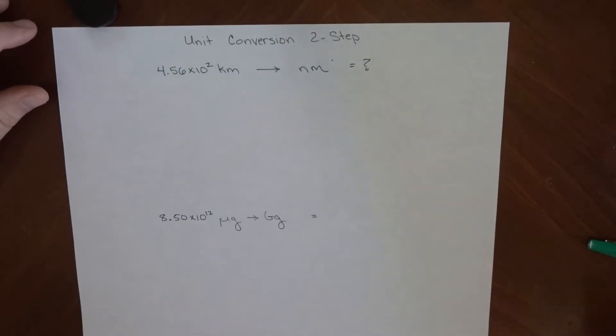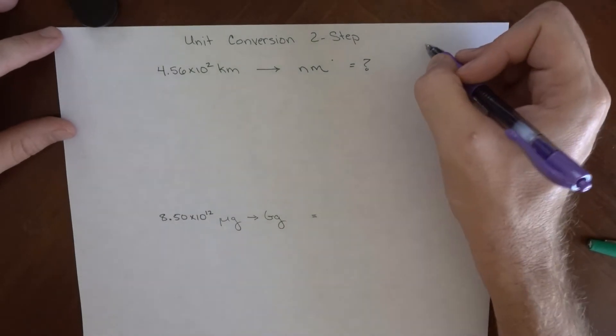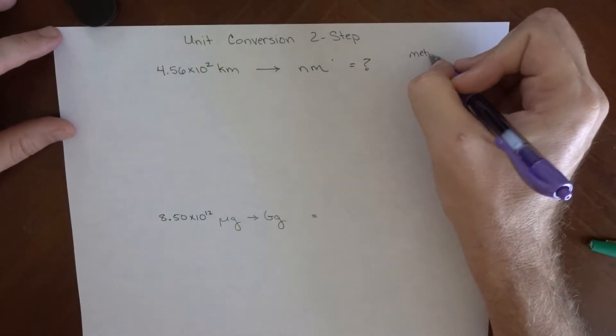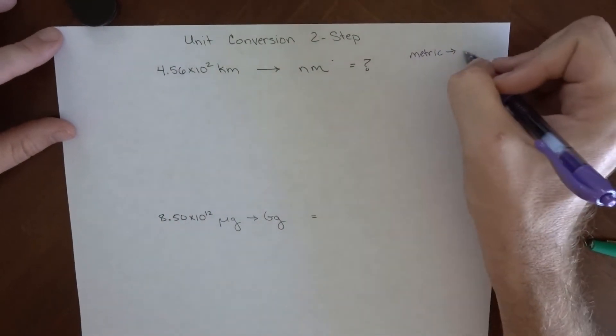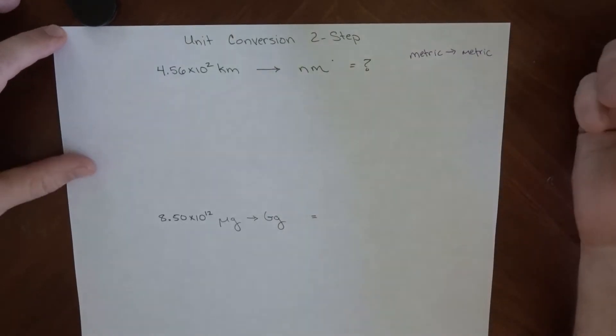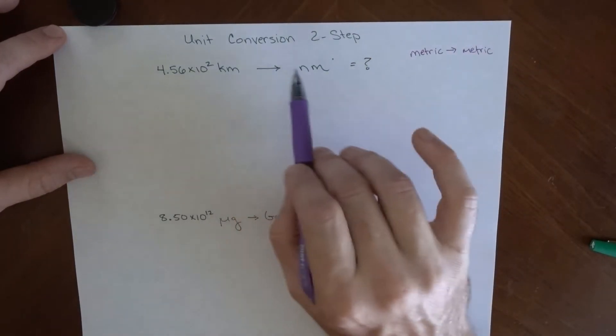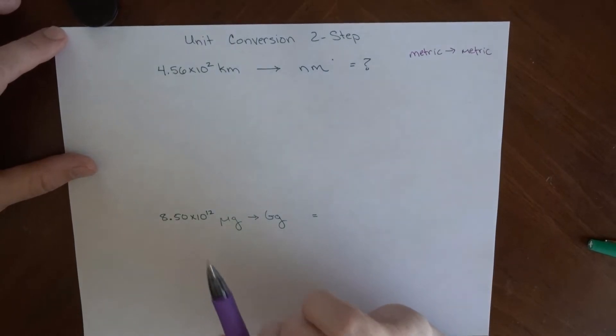So now we're going to do a two-step unit conversion. I want to change between two metric units. This is from one metric unit to another metric unit, so it's a metric to metric conversion. And in doing so, I'm going from one metric prefix to another metric prefix, so I need to do this in at least two steps.